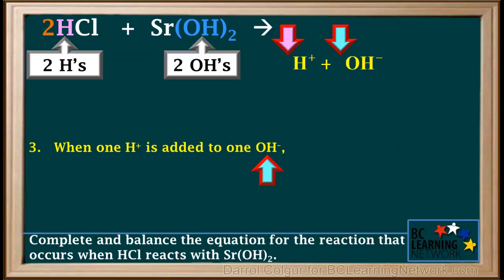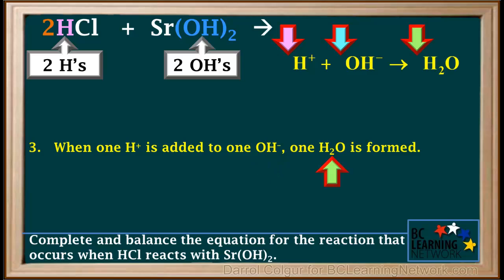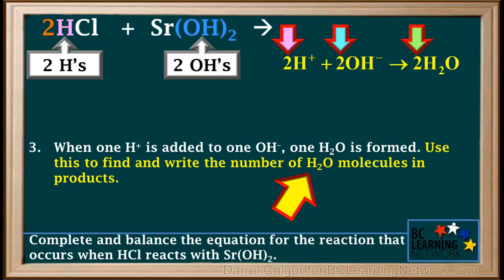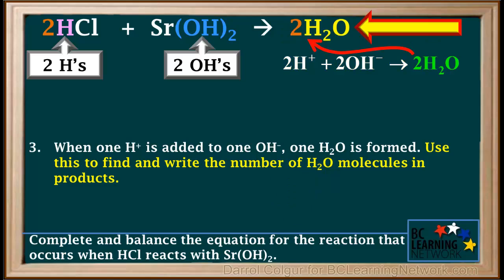When one H⁺ is added to one OH⁻, one H₂O is formed. So when two H⁺'s are added to two OH⁻'s, two molecules of H₂O are formed. We can now use this to find and write the number of H₂O molecules in the products. We'll write two H₂O as one of the products of this reaction.